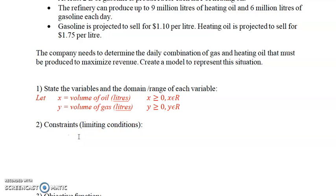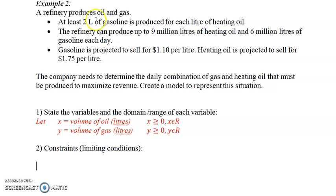Let's look at some of the constraints or what's limited on your graph here. So we get that from the bullets. It said the refinery can produce up to 9 million liters of oil and 6 million liters of gas.